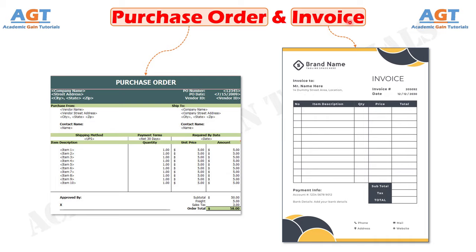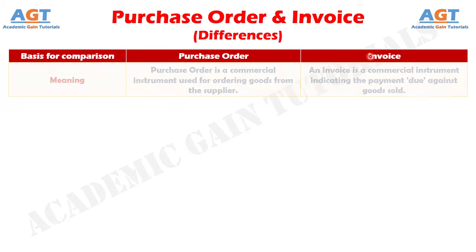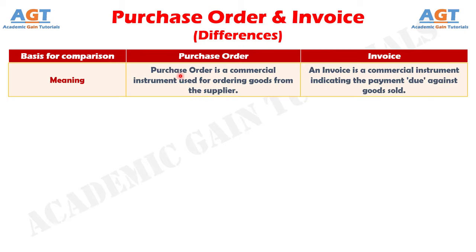Let's look into the basic differences between purchase order and invoice in a tabular form. Difference number 1: Purchase order is a commercial document used for ordering goods from the supplier, whereas an invoice is a commercial document indicating the payment due against goods sold.